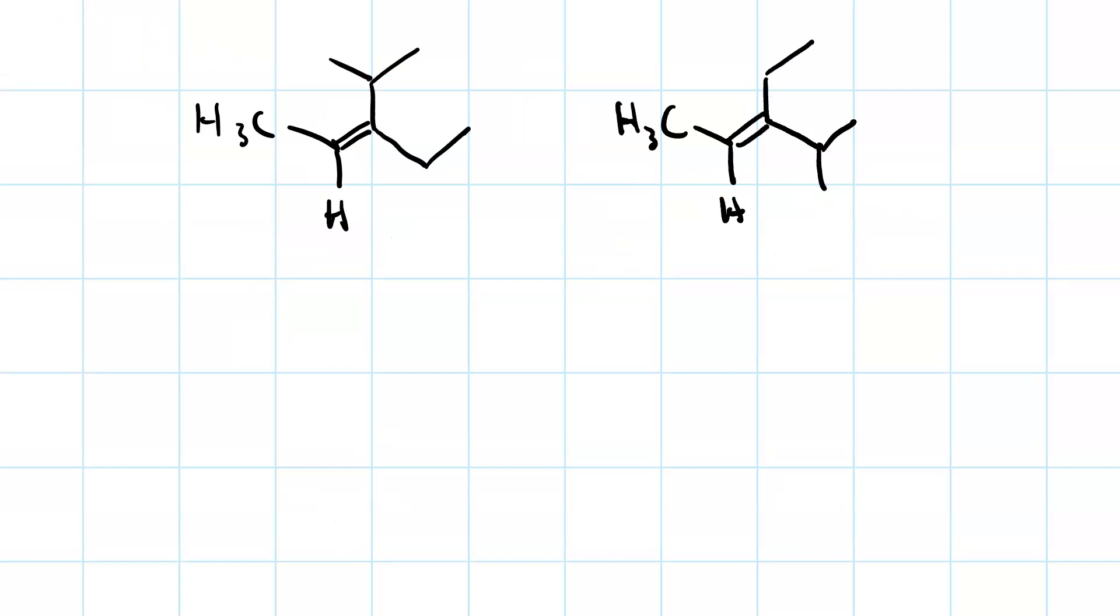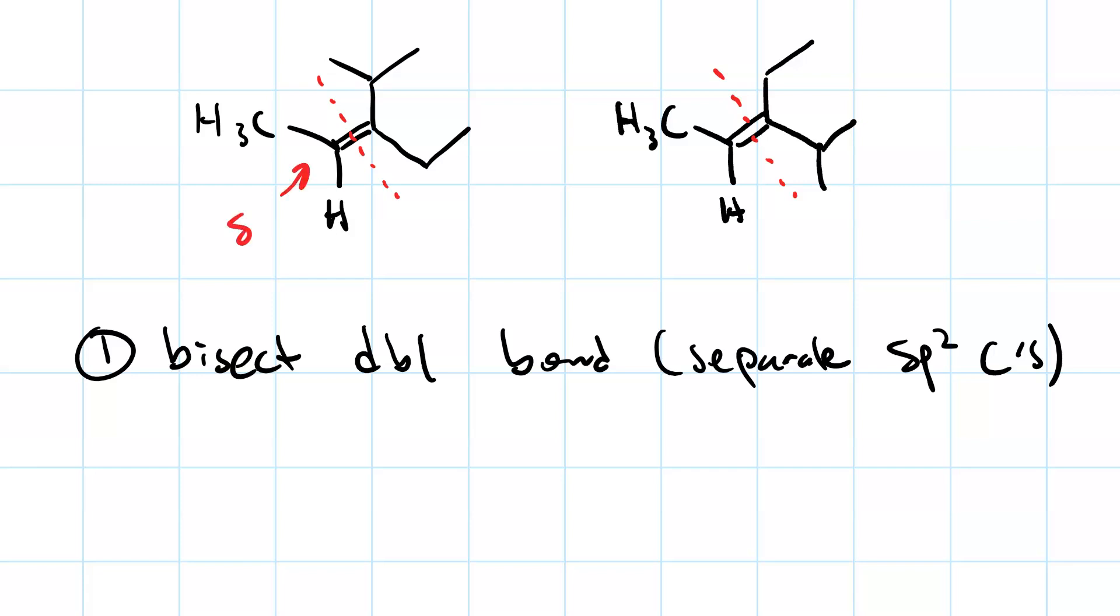To apply the E-Z designation, first bisect the double bond. In doing this, you want to separate the two sp2 carbons from each other. So we're talking about down the middle of the double bond like that. Now we've got an sp2 carbon on either side of our separation.